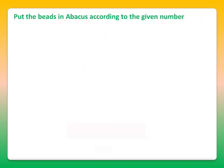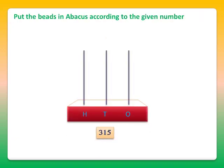Next, we will put the beads in the abacus according to the given number, and the number is 315. So 10 plus 5 is 15. We will put 5 beads in the ones stick. And since 10 plus 5 is 15, that's 1 ten, so 1 bead in the tens stick. And 300, so 3 beads in the hundreds stick - it's 1, 2, and 3. So the value 315 is represented on the abacus.